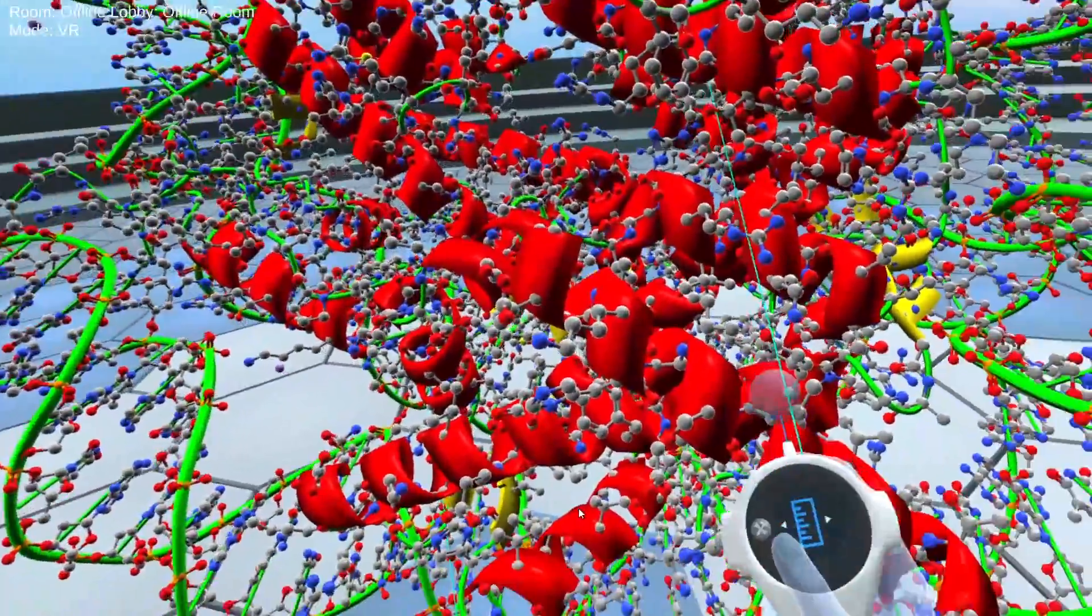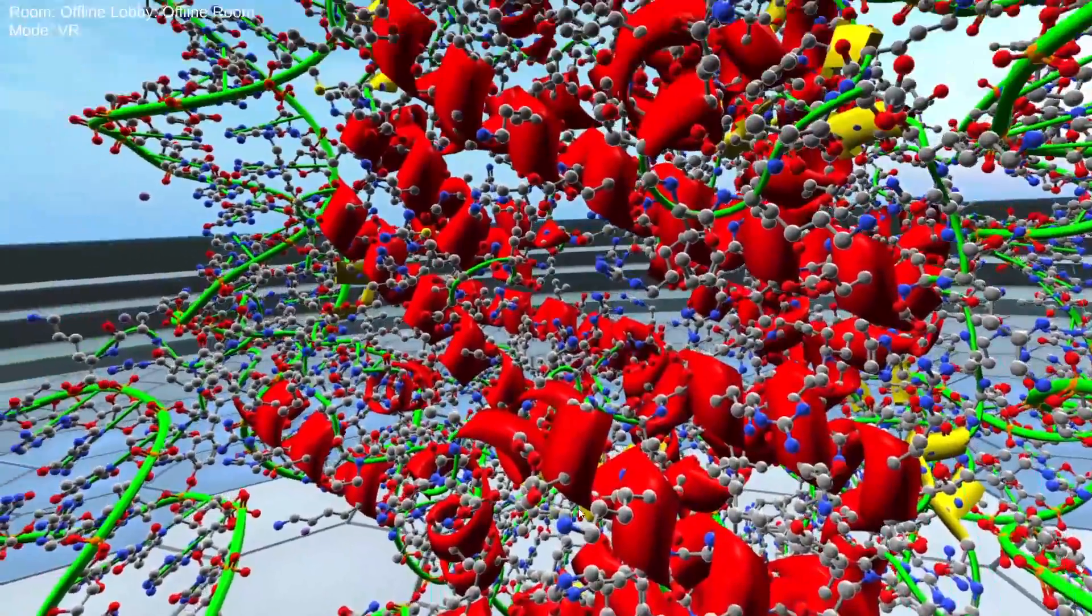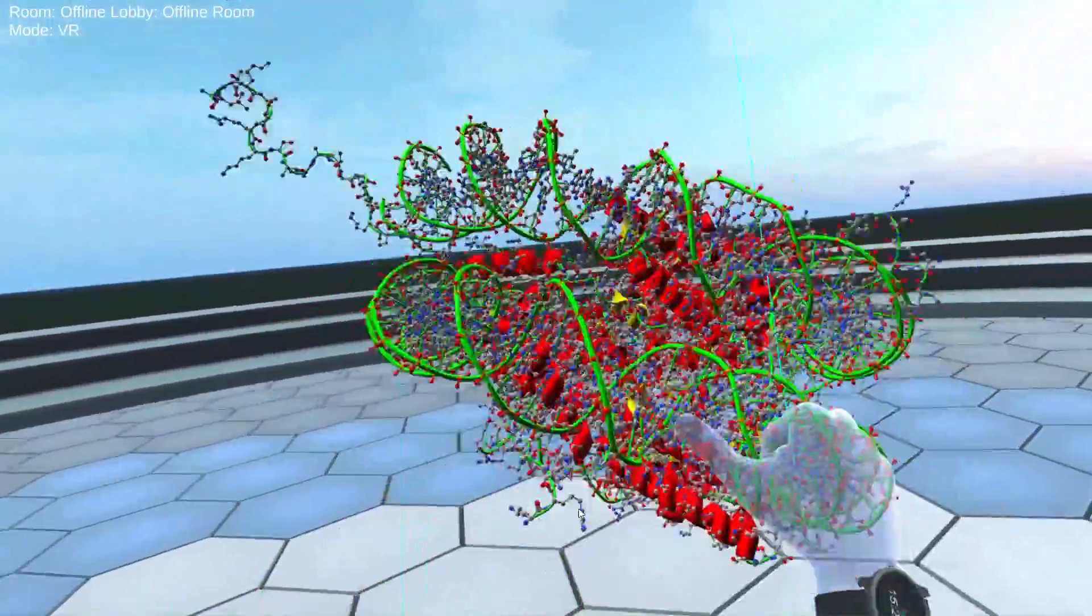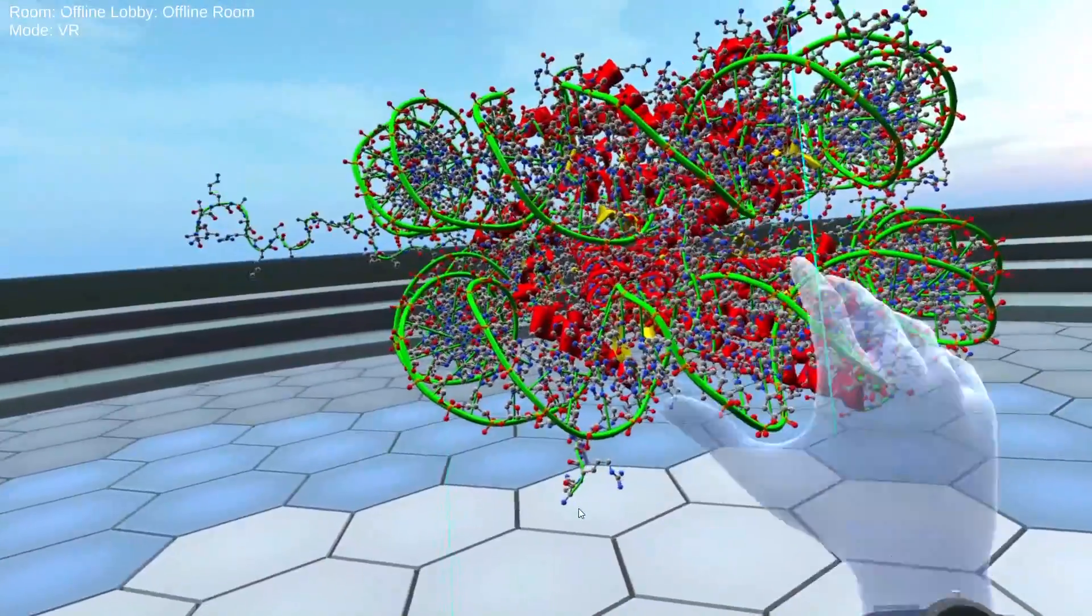And of course, there are many, many, many of these in a row, which then super coil to form chromatin. And so that's what this looks like.